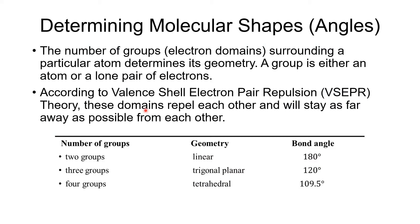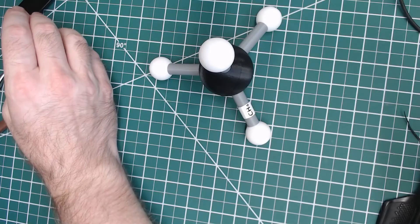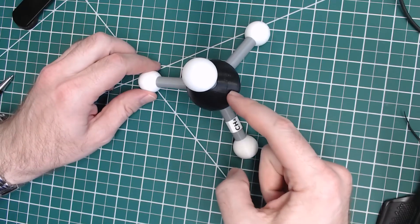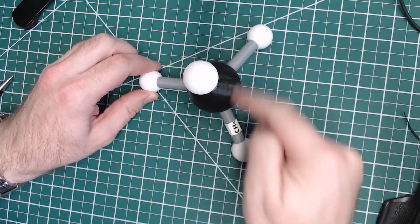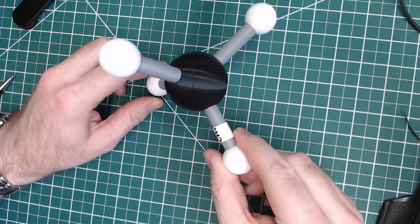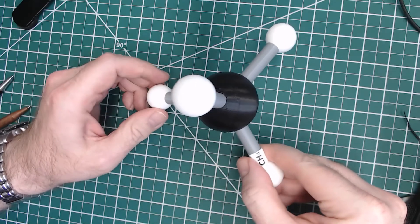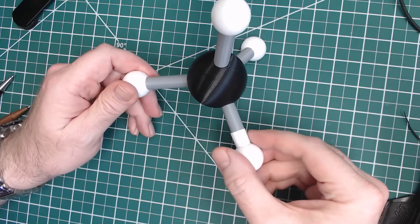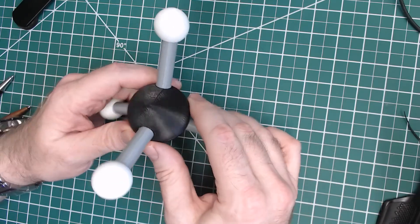When we have four groups around the central atom, we get tetrahedral geometry at approximately 109.5 degrees — actually 109.4722 something, but 109.5 is good enough. Here is methane, CH4, with a carbon and four groups around it in three dimensions. We'll be looking at this model quite a bit throughout this chapter.